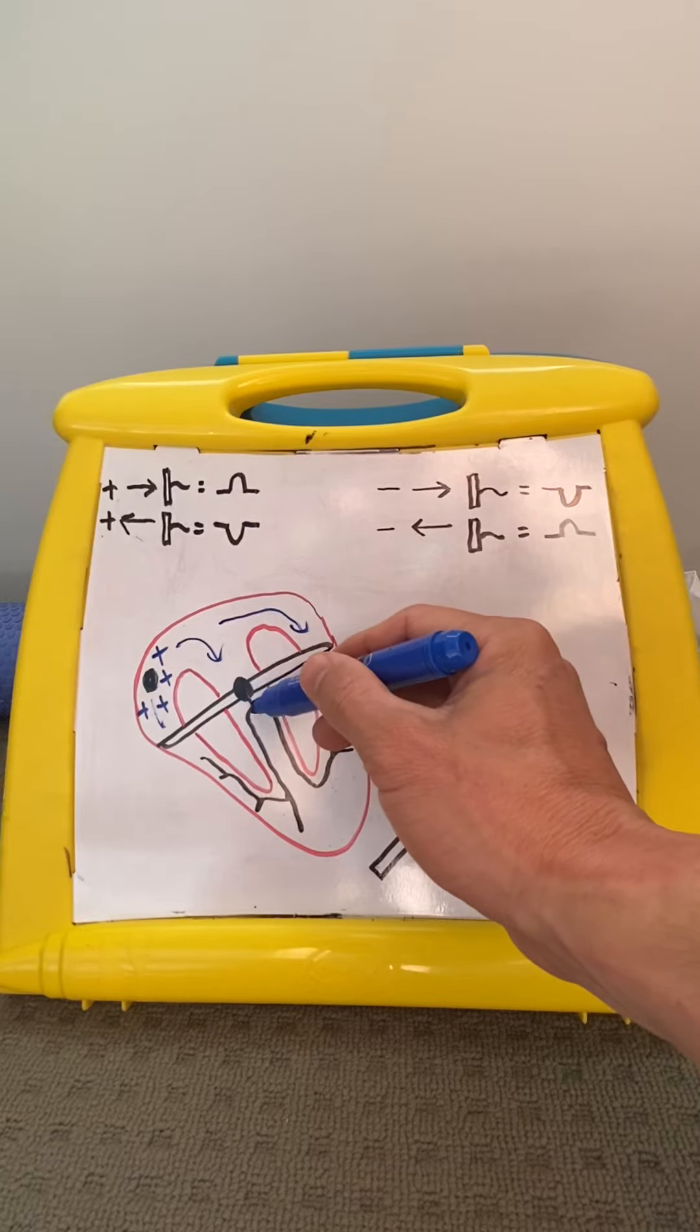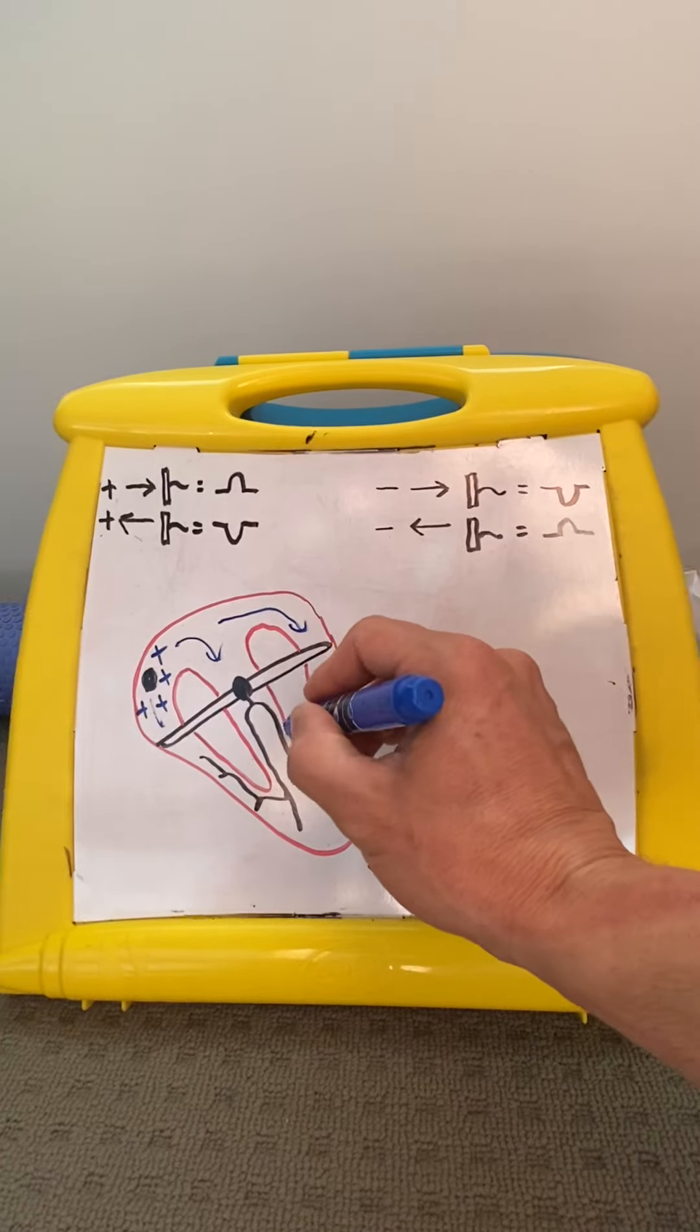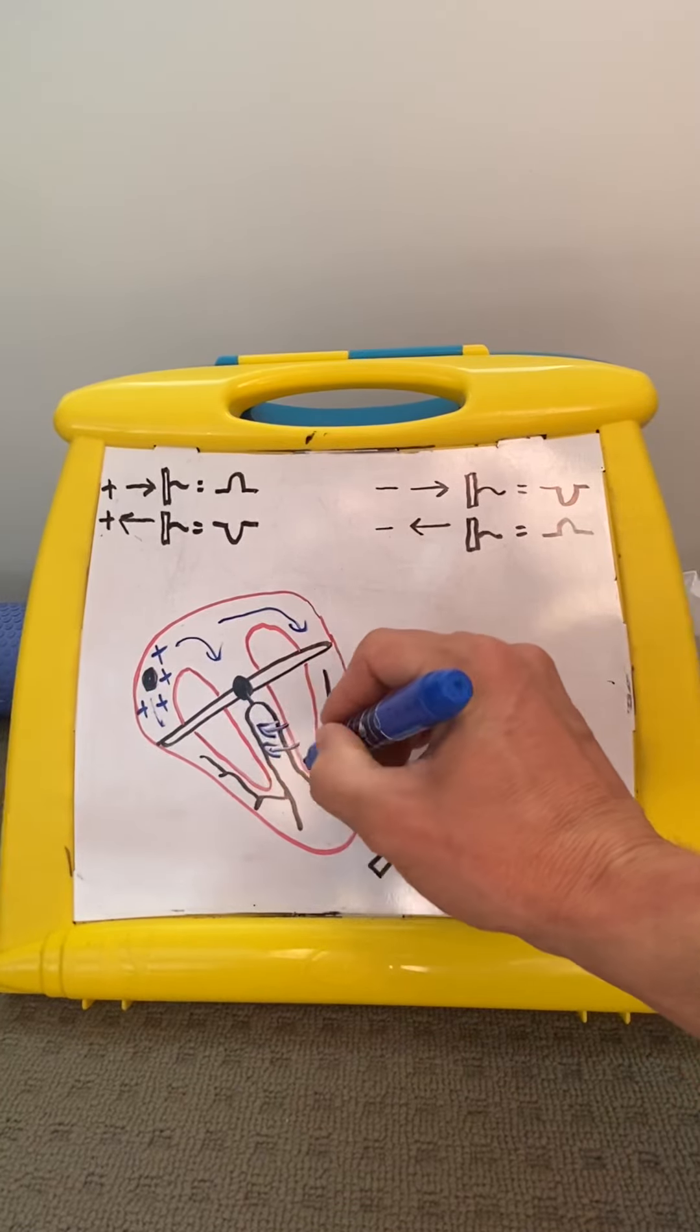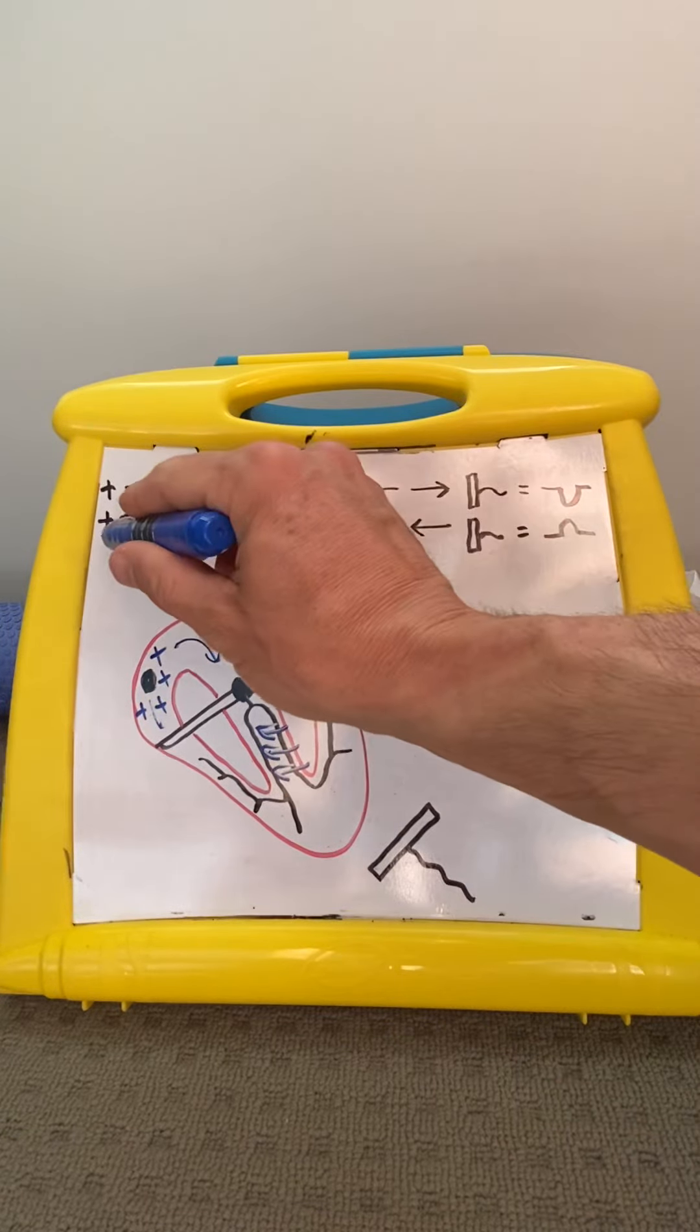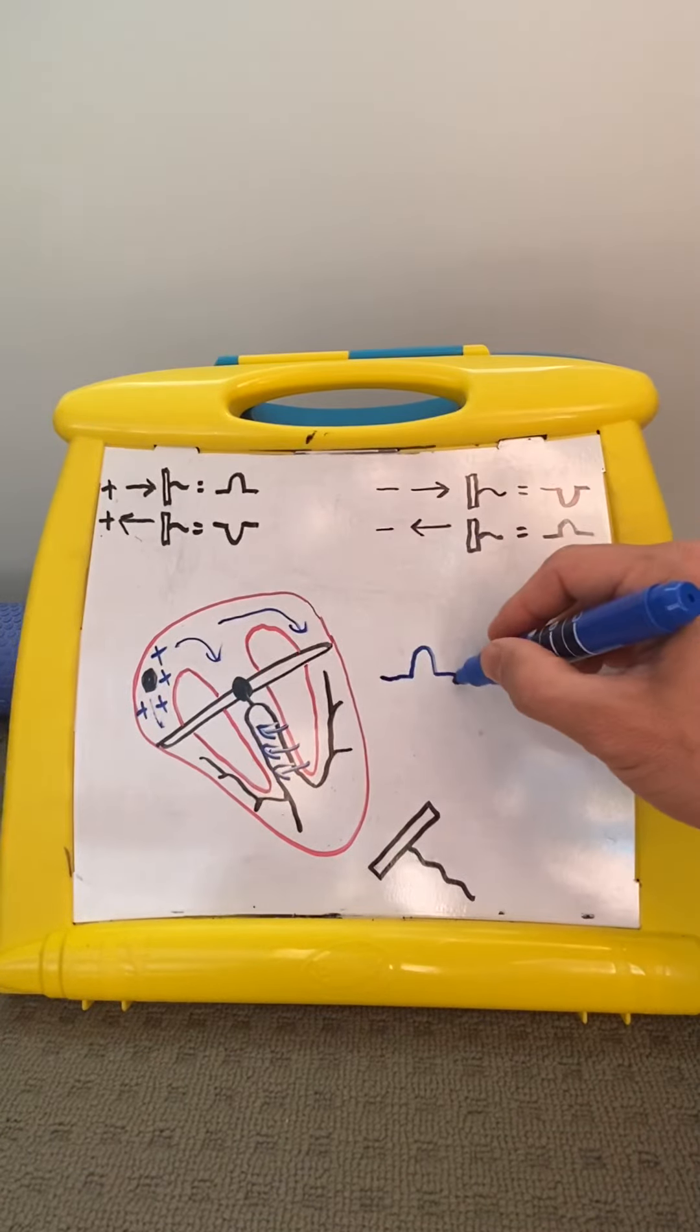Then it hits the bundle of his and the Purkinje fibers, and the positive wave moves in this direction on average, which is away from the lead. Positive away from the lead, you get a dip down.